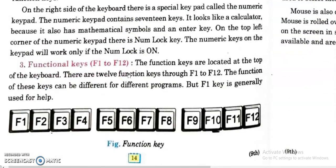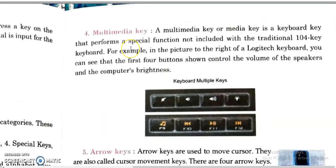Alphabetic keys are the keys from A to Z, used to feed text information into the computer. Numeric keys from 0 to 9 are used to feed numeric data. There are two rows of numbers: one on the top row above the alphabetic keys, and a number pad on the right side of the keyboard. Functional keys range from F1 to F12 and are located at the top of the keyboard. The use of function keys varies from application to application, but F1 is generally used for help purposes.